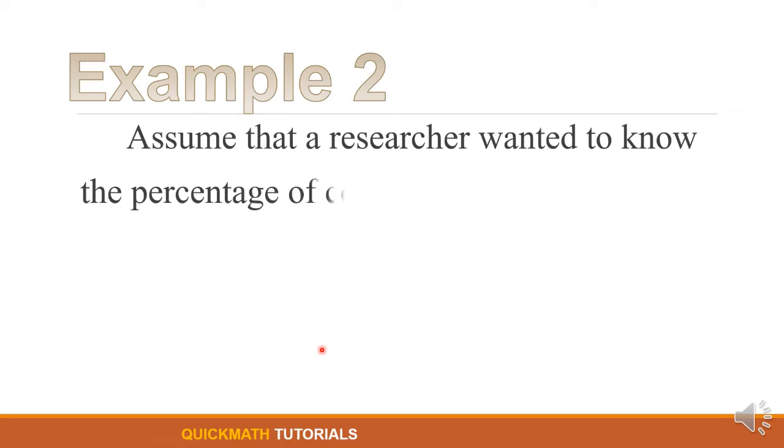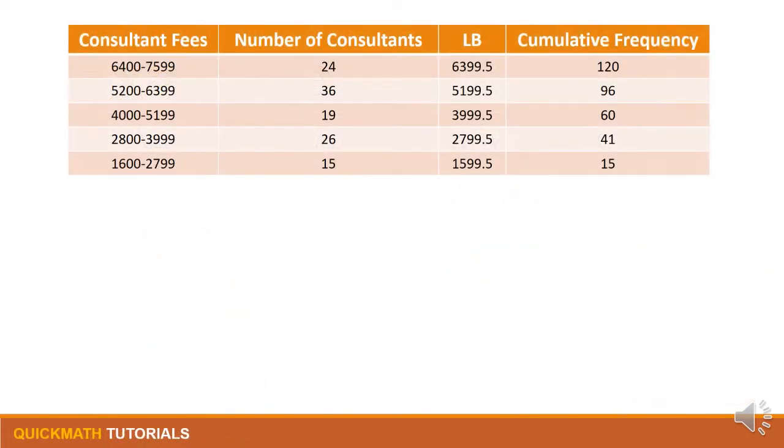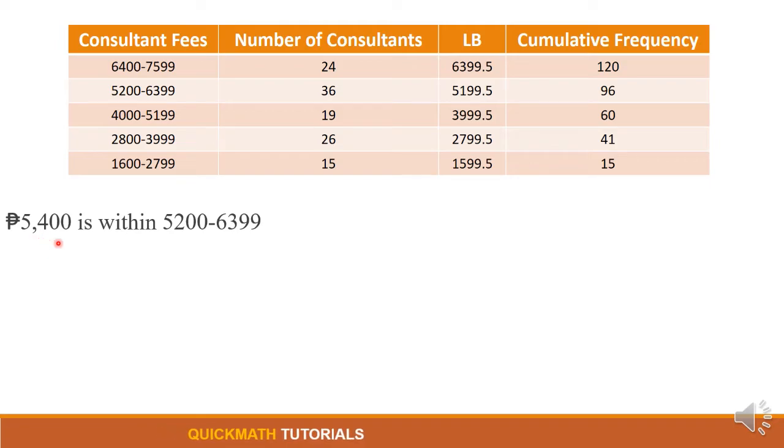For our second example, we have: assume that a researcher wanted to know the percentage of consultants who made 5,400 pesos or more per day. So we are given here the table. So again for our first step, let's determine in which class interval does 5,400 belong. So as you can see, 5,400 belongs to the class interval of 5,200 to 6,399, so we will box this row.